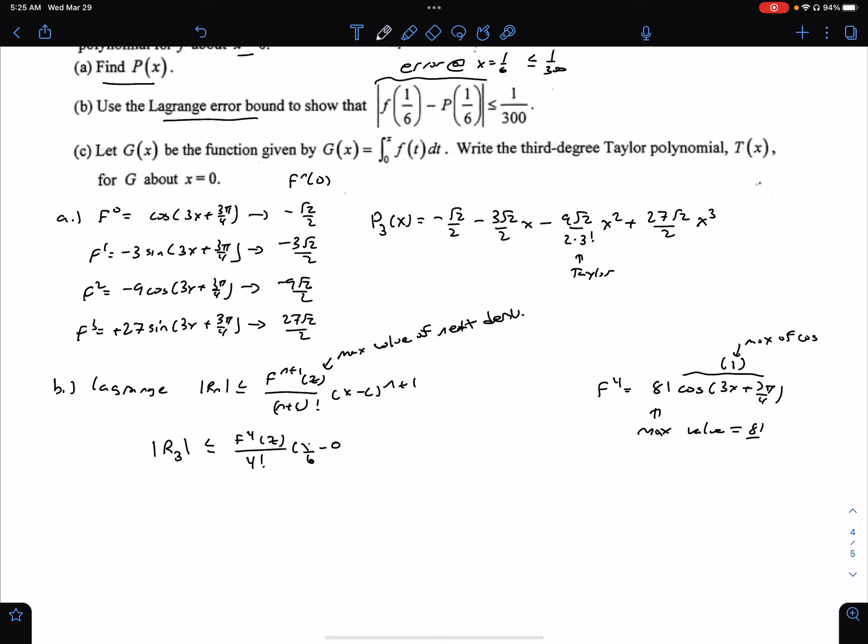And this becomes our x value here is 1/6 minus c, our center, which is just 0, to the fourth. And we just plug it in. Our maximum value, we said it was 81 over 4 factorial. And this becomes (1/6)⁴.